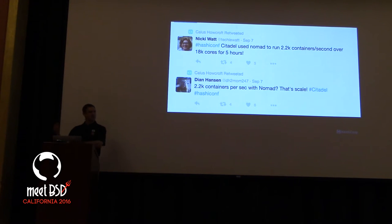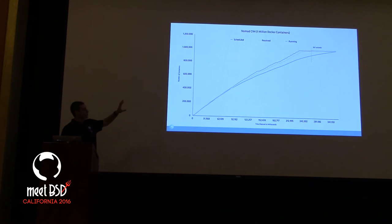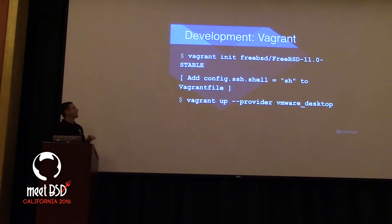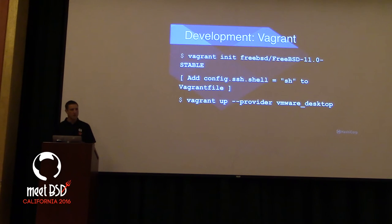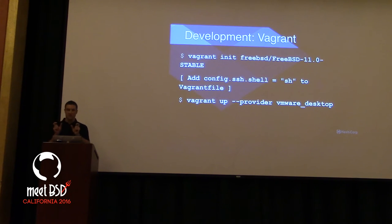It would be really nice if some of that was happening on FreeBSD. How do we get to the point where the operating system is fungible? I'm going to go through some of the developer workflow for doing rapid iterative development on FreeBSD using some of these tools, but I'm mostly interested in getting to the point where the operating system is a fungible line item in a config file.